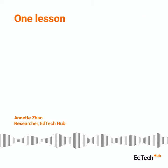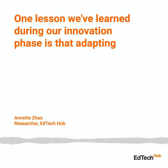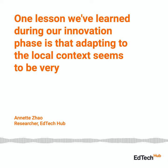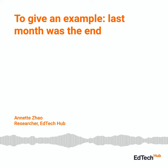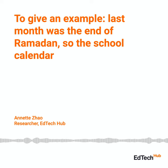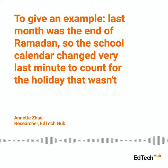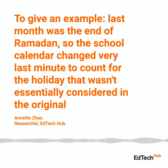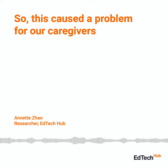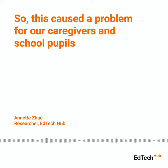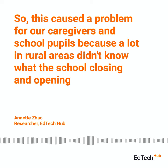One lesson we've learned during our innovation phase is that adapting to the local context seems to be very effective. To give an example, last month was the end of Ramadan, so the school calendar changed very last minute to account for the holiday that wasn't essentially considered in the original school calendar. This caused a problem for our caregivers and school pupils because a lot of rural areas didn't know what the school closing and opening days were.